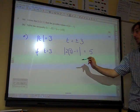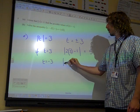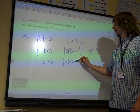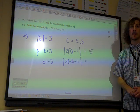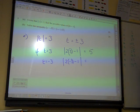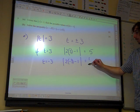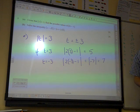Now, if t equals minus 3, the modulus of 2 lots of minus 3 minus 1, that's minus 6, minus 7, which is 7.